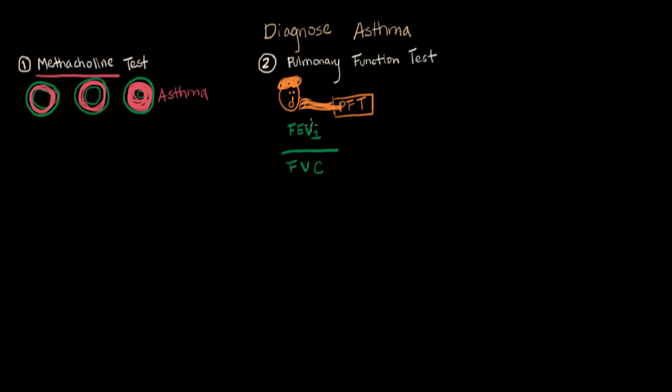The ratio here, FEV1 divided by FVC, should in a normal lung be equal to or greater than 80%. So more than 80% of the air that you eventually can ever breathe out should come out in the first second. This tells us you have a healthy lung without obstructive disease.